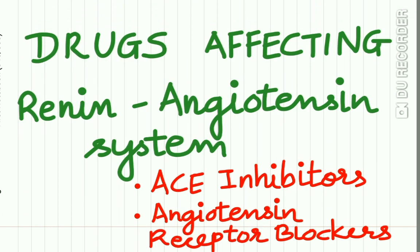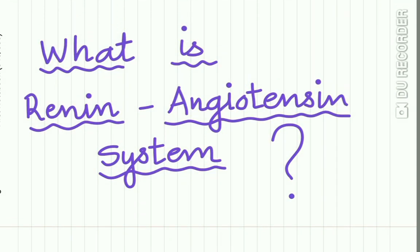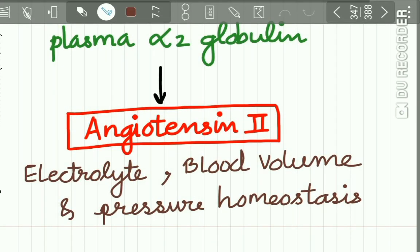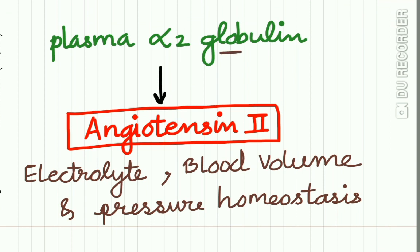Now let us study the drugs affecting the renin-angiotensin system. These drugs are of two groups: ACE inhibitors and angiotensin receptor blockers. A short note on ACE inhibitors is more commonly asked in exams. First, what is the renin-angiotensin system? Plasma alpha-2 globulin is the precursor of angiotensin 2 enzyme. This generates angiotensin 2, which is associated with electrolyte homeostasis, maintenance of blood volume and pressure homeostasis in the body.